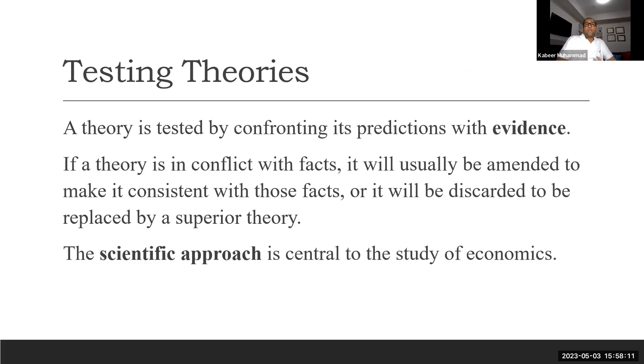Theory is tested by confronting its prediction with evidence. If a theory is in conflict with facts, it will usually be amended to make it consistent with those facts or it will be discarded. Initially, an economist presents some theory. In order to prove that theory, they test it. If the theory passes the test, then we say it's a theory. But if it is not, then we discard it or we amend it and then we prove it.